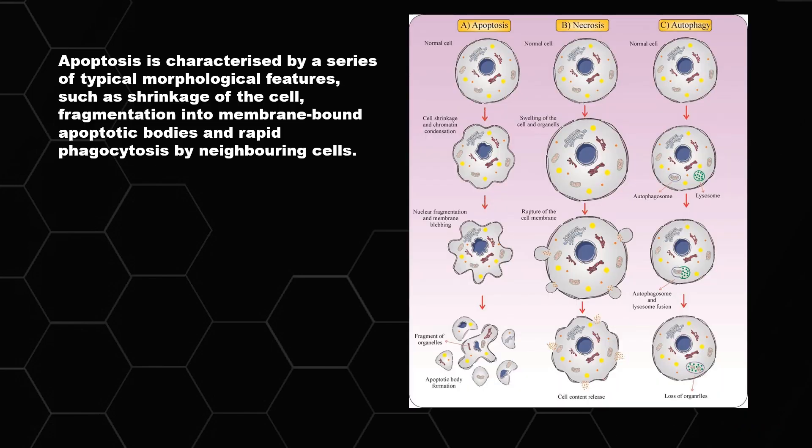But let's understand the characteristic features of apoptosis. In apoptosis, typical morphological changes happen in a cell. It is a programmed cell death. First, shrinkage of the cell happens, then further we have fragmentation, chromatin condensation, nuclear fragmentation, fragmentation into membrane bound apoptotic bodies, and rapid phagocytosis. That is apoptosis.